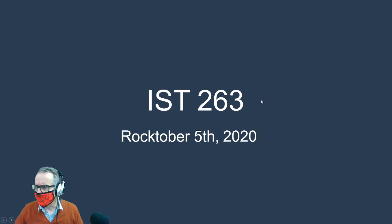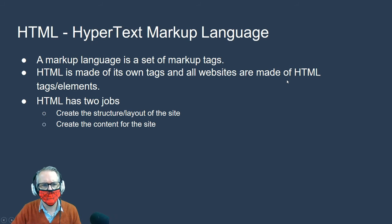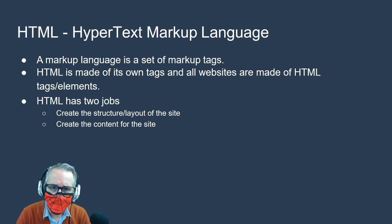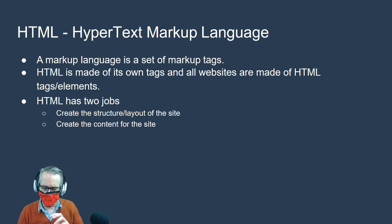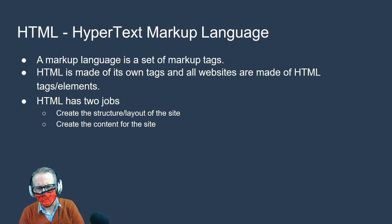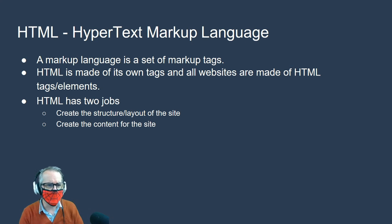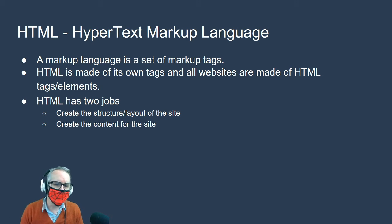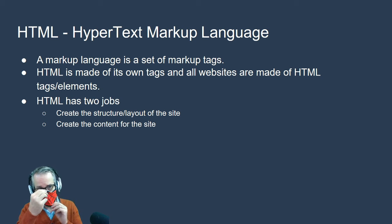So, what is HTML? HTML is a HyperText Markup Language. Hypertext is just text with links in it, and a markup language is any language that uses tags. The two most popular markup languages are HTML and XML. Some tags include things like headlines, paragraphs, and images. All websites are made up of HTML tags and elements.